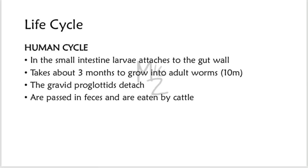Life cycle. The life cycle of Taenia saginata involves two stages: the human cycle and the cattle cycle. In the human cycle, in the small intestine, the larvae attach to the gut wall with the help of suckers. It takes about three months to grow into an adult worm about 10 meters in length. Then the gravid proglottids containing eggs detach daily and are passed in feces, and are then eaten by cattle.